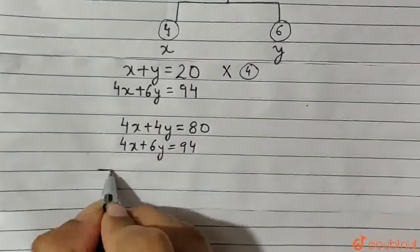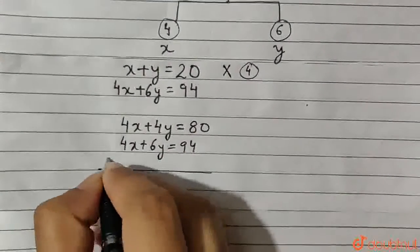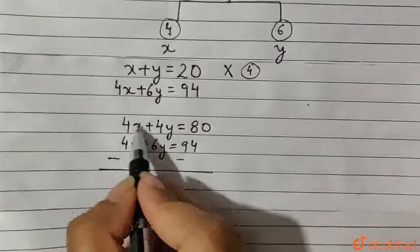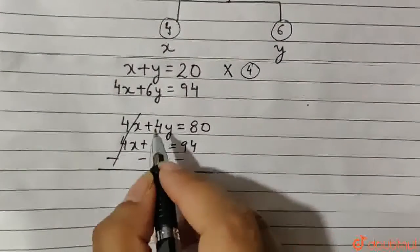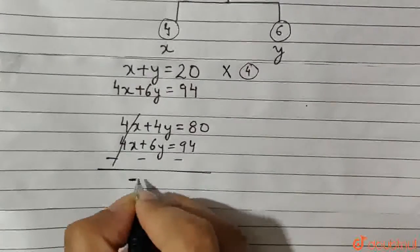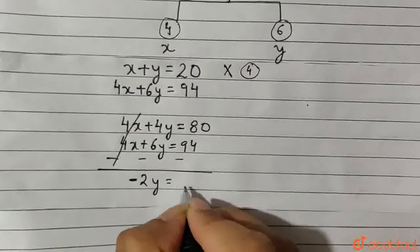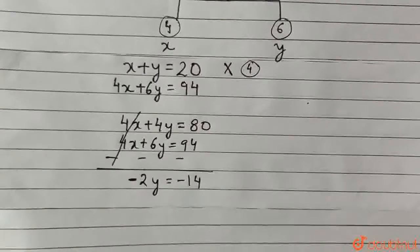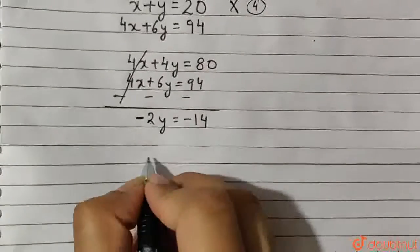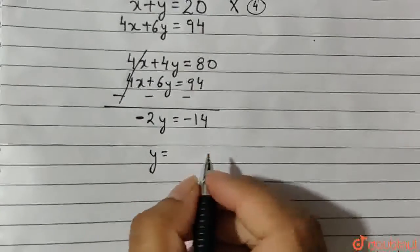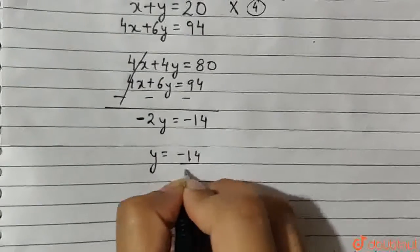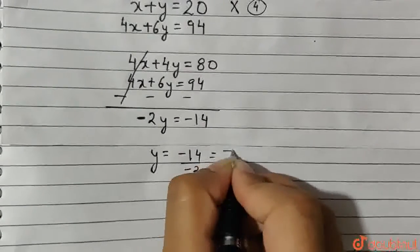Now, on subtracting both equations, we obtain 4X minus 4X which will cancel out, 4Y minus 6Y which gives minus 2Y, and 80 minus 94 which gives minus 14. Therefore, Y equals minus 14 upon minus 2, which equals 7.